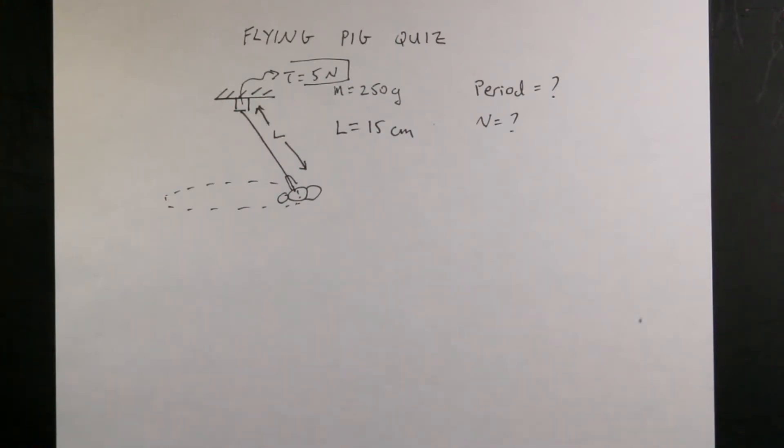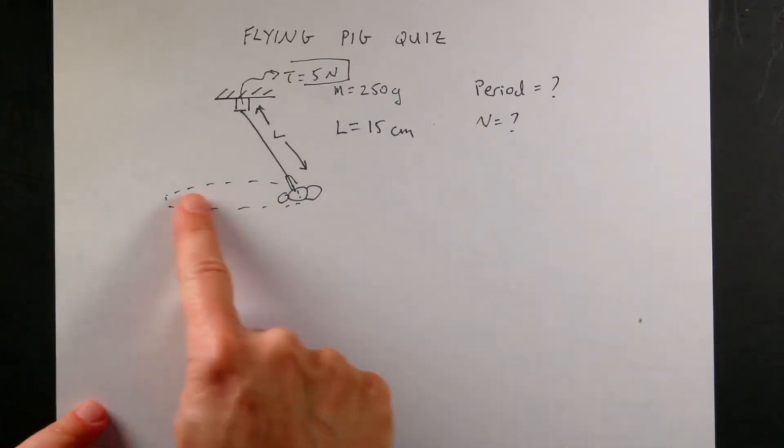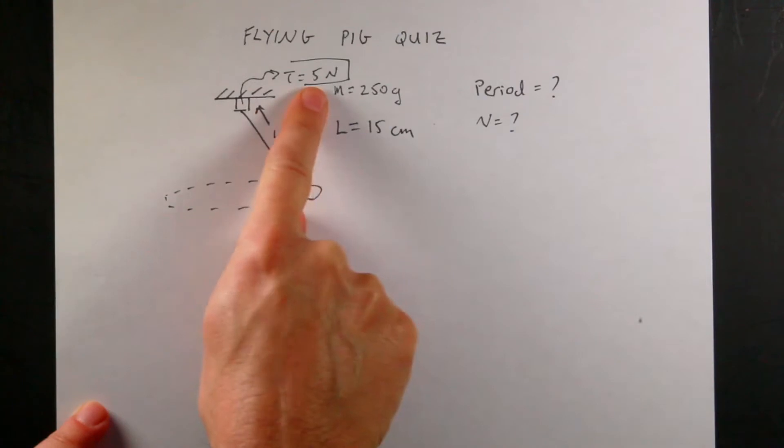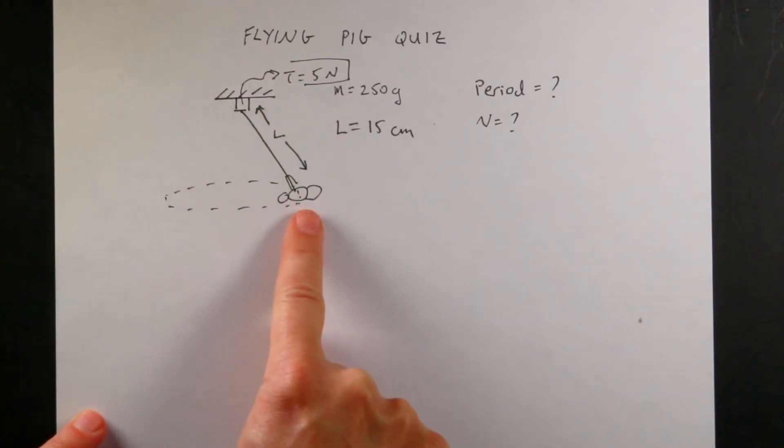But it could be anything. It didn't even have to be powered. It could be like a ball swinging around a string or whatever. So in this case I have it hooked up to a sensor at the top that measures the tension in the string. So the tension is reading 5 newtons. The mass of the pig is 250 grams which may seem a little high but that's fine. This lets us work with it. And the length of the string is 15 centimeters. So I came up with two questions. What's the period? How long does it take to move around in a circle? And number two, how fast is it moving?